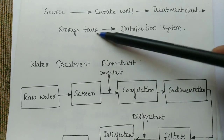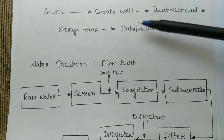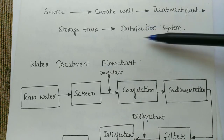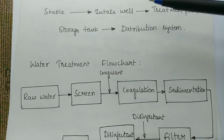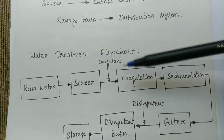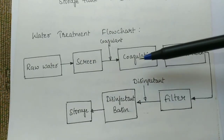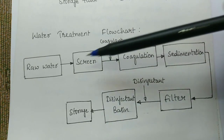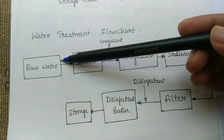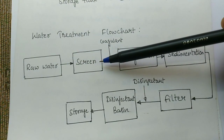From the storage tank, water is taken to the distribution system and distributed throughout the city or village. Now let us look at the flowchart of the water treatment plant and its various units. First, raw water is brought to the screen.